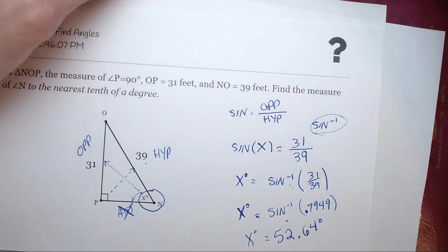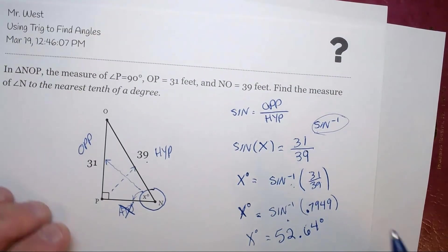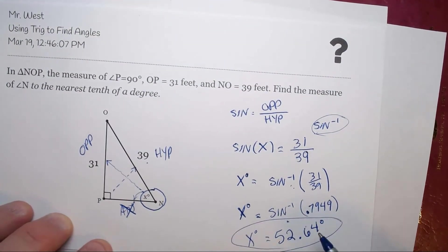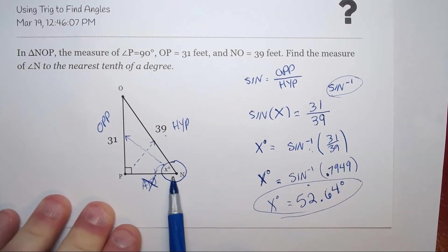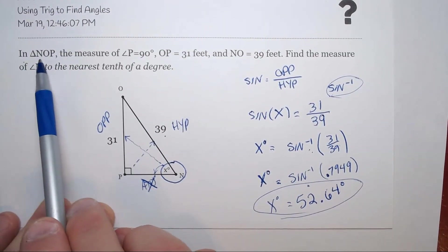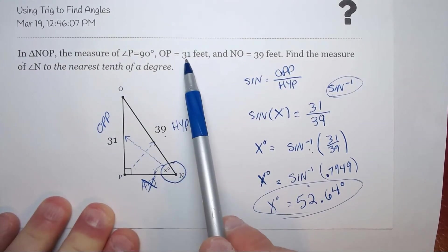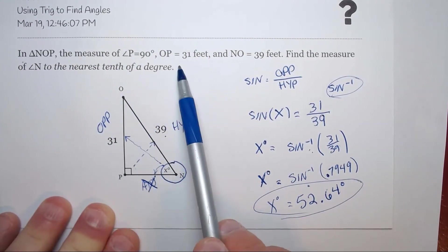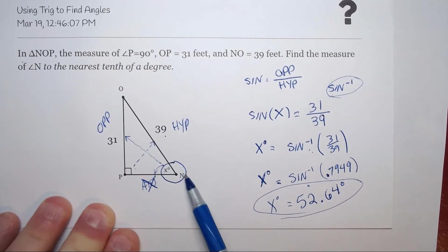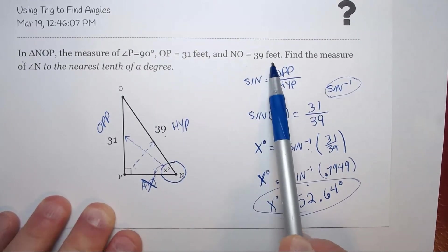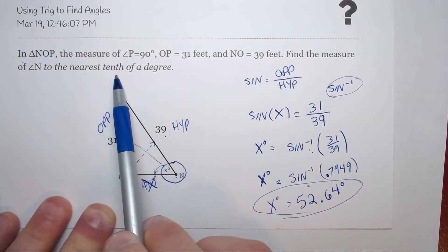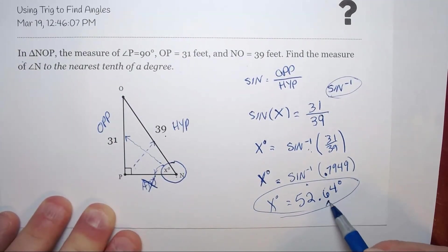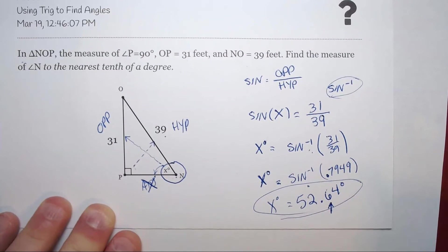We solved for this missing angle. Let's look. It says in triangle NOP, the measure of angle P is 90 degrees. The measure of OP is 31 feet, and the measure of NO, which is the hypotenuse, is 39 feet. Find the measure of angle N to the nearest tenth of a degree. So we just want to round off to the nearest tenth.